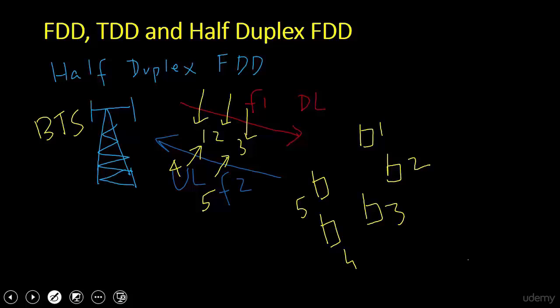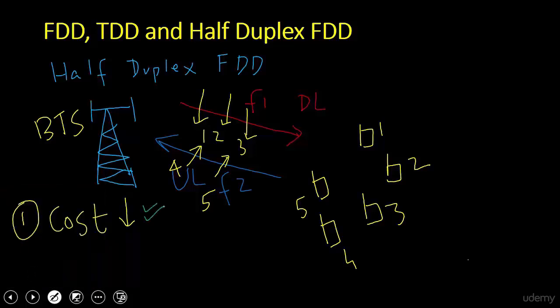The advantage of Half Duplex FDD is cost. Since UEs do not have to simultaneously process both uplink and downlink, there is no need for a duplexer, so the cost of devices will be lesser compared to FDD. This is a win from the consumer's point of view.